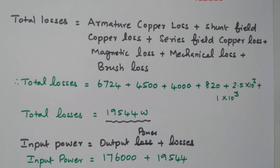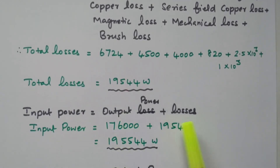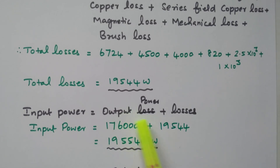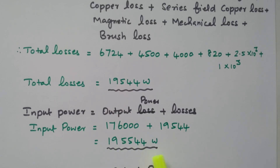We already calculated the output power from terminal voltage and load current. Now we have the losses, so we can find the power input. Power input equals output power plus losses. When power is input, some is lost and the remaining is delivered as output. So power input = 176,000 + 19,544 = 195,544 watts is the power input given to the DC generator.